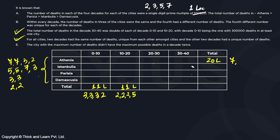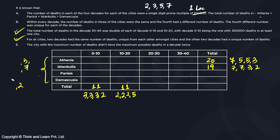For Athenia, the values are 7, 5, 5, 3 lakh across four decades. For Istanbul (19 lakh total), the values are 7, 7, 3, 2 lakh. We have confirmed Athenia has only one 7, while Istanbul has two 7s. The remaining two cities — Parisia and Damascus — will share combinations with two 3s and two 2s.